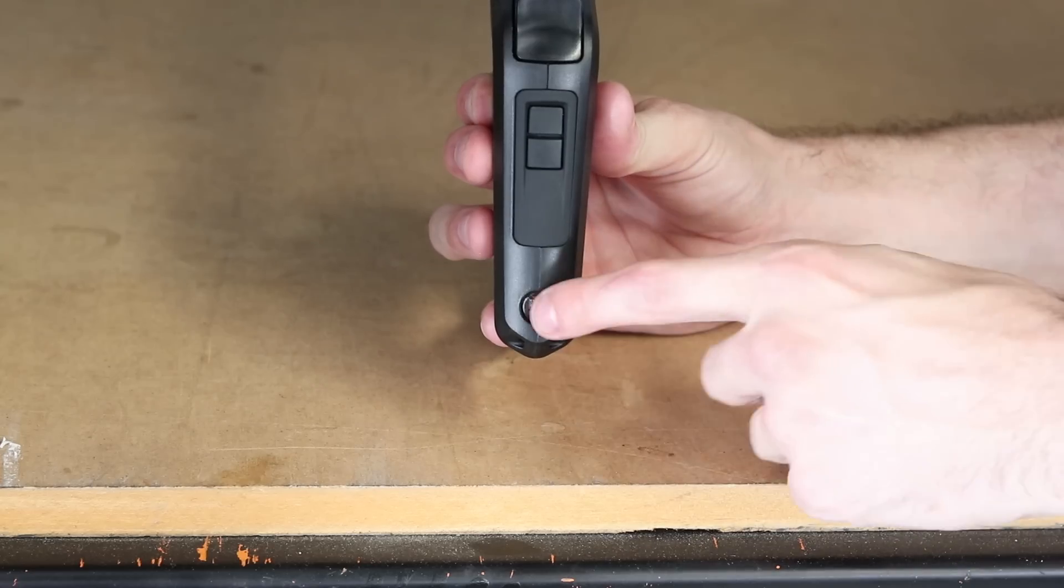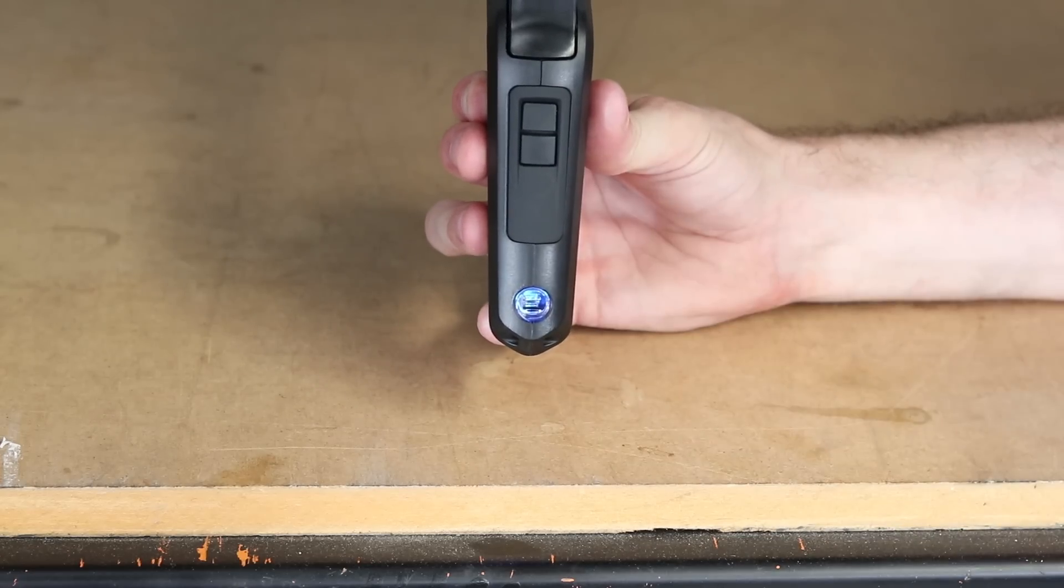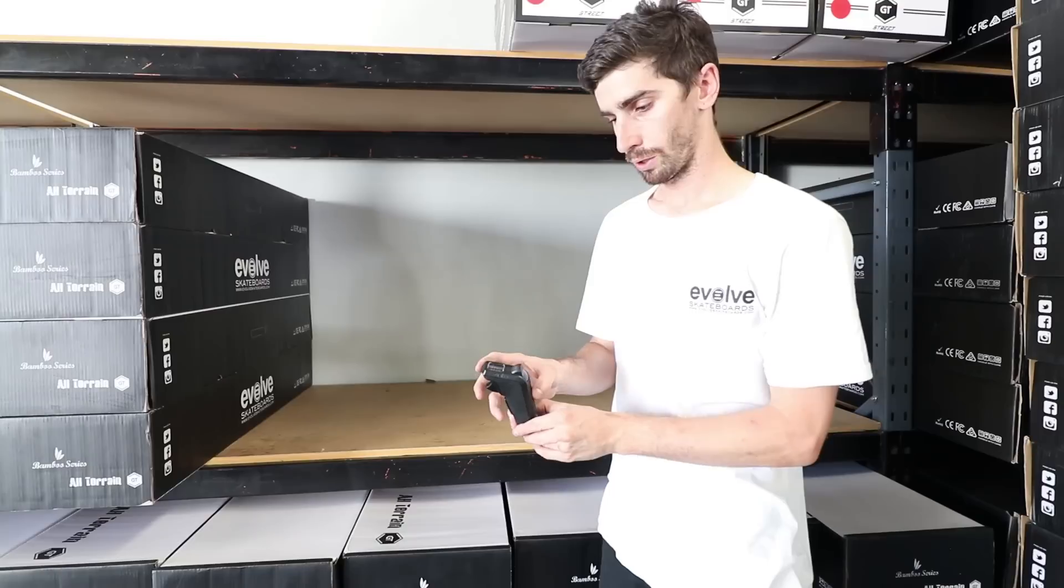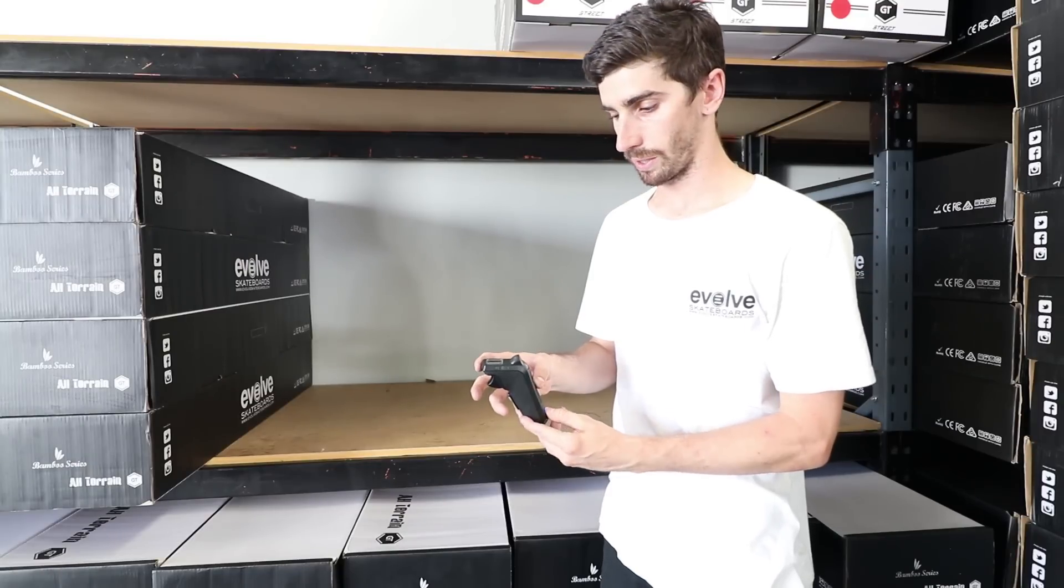We want to start with turning the remote on. Once it's on, access our menu screen, scroll down to where it says more info and select.